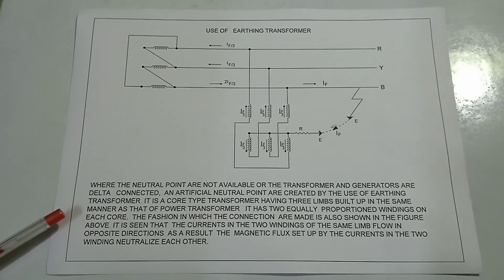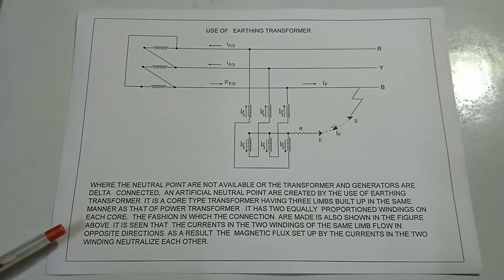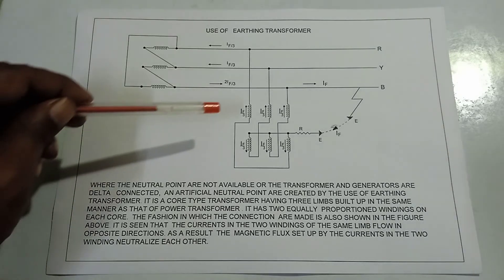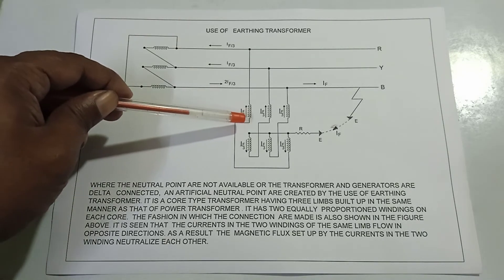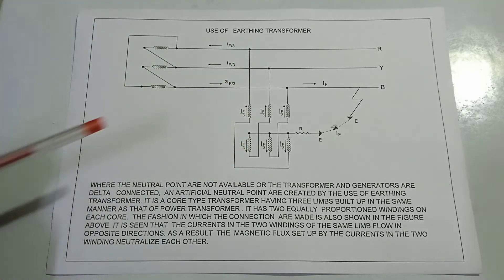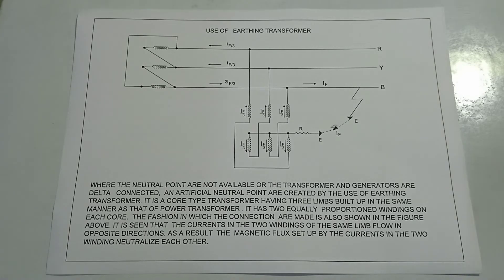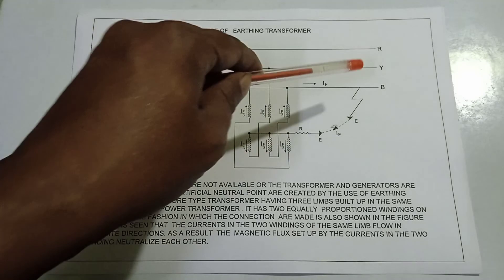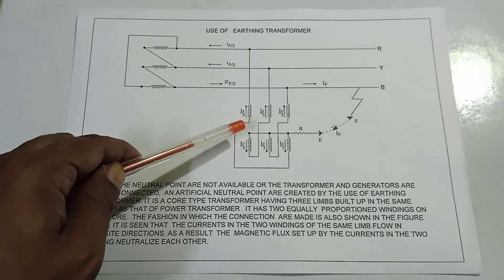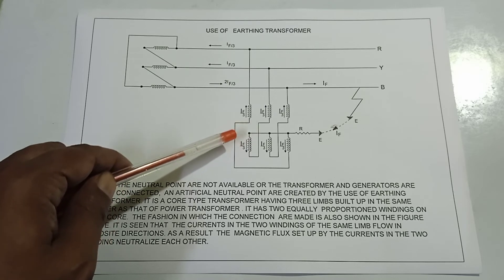As shown in the figure, the currents in the two windings of the same limb flow in opposite directions. As a result, the magnetic flux set up by the currents in the two windings neutralize each other. The fault current divides into three parts through the transformer.